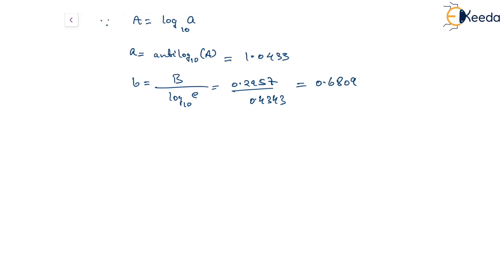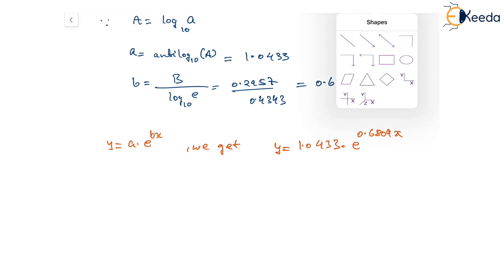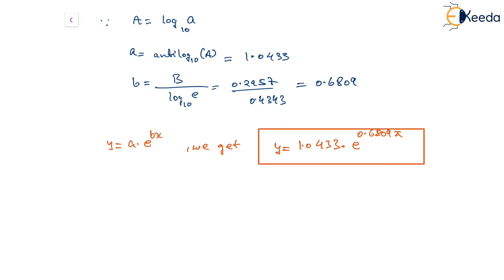Therefore, substituting these values in the equation y equal to a times e to the power of bx, we get the equation y equal to 1.0433 times e to the power of 0.6809x. And this is the exponential equation we are looking for — this is the exponential fit for the given data.